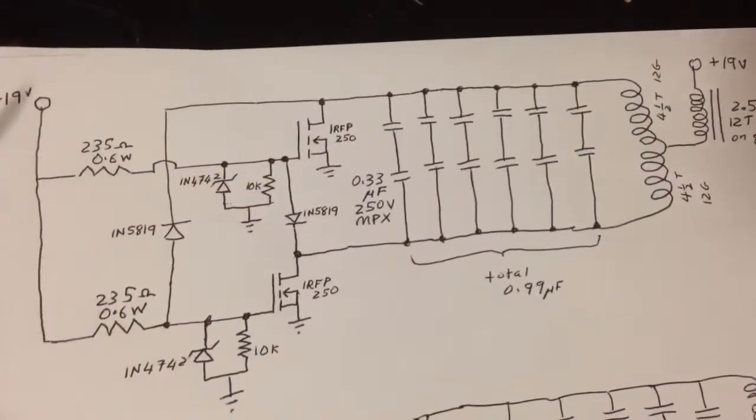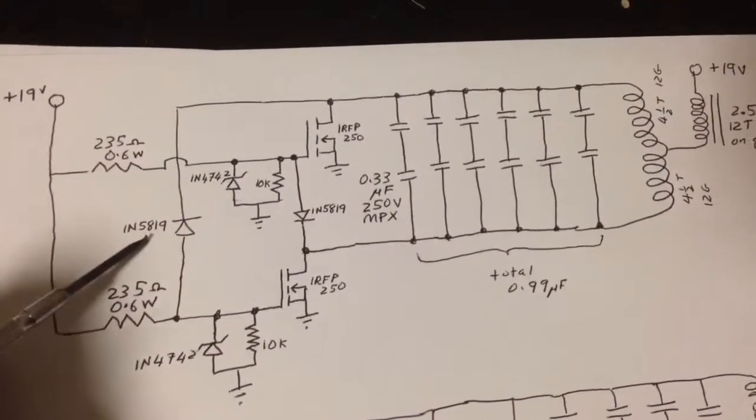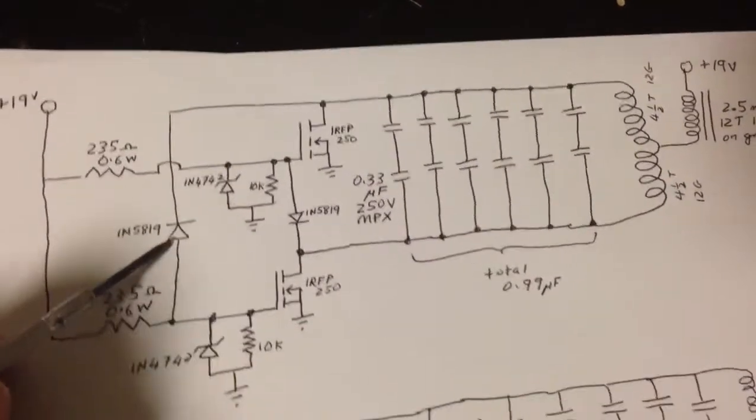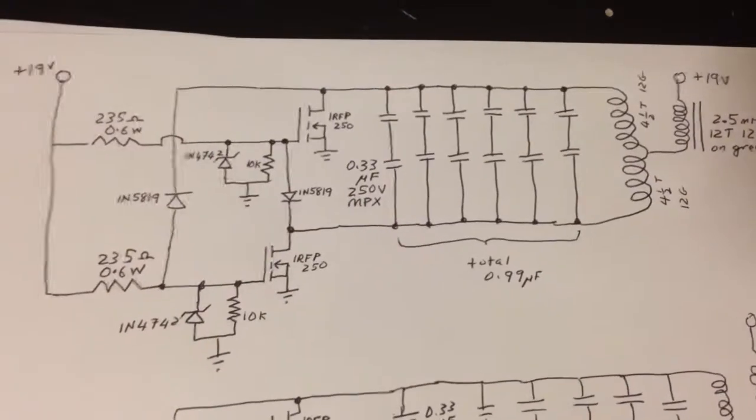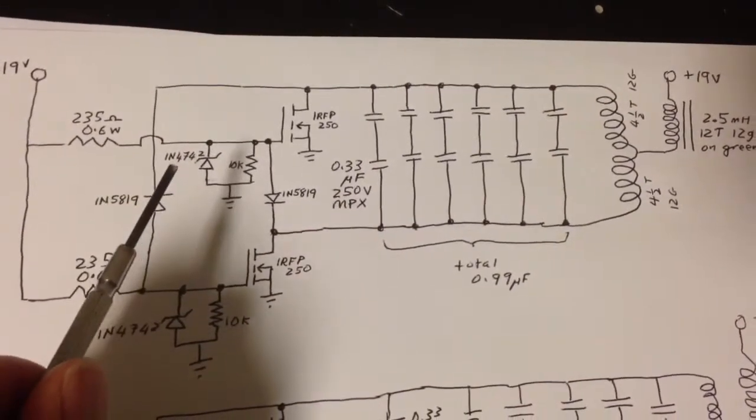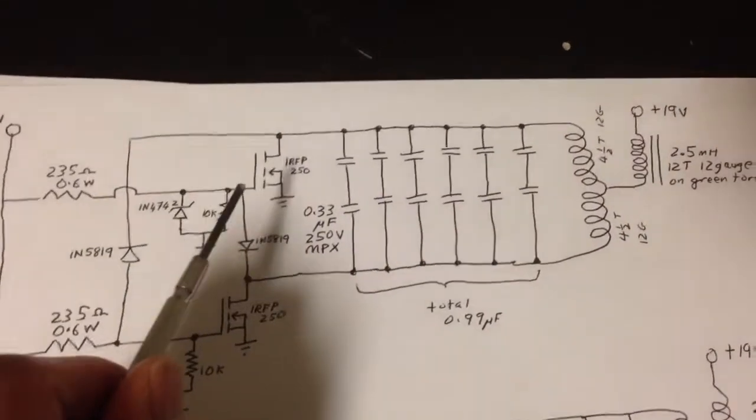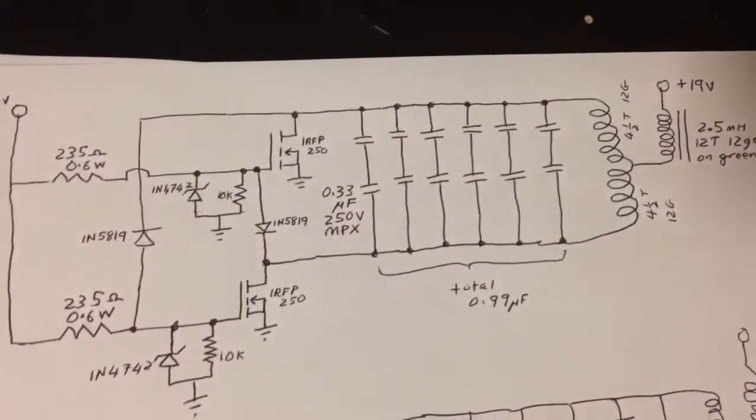What I was using with the circuit, which is what everyone else uses pretty much, is 5819. This one is a very fast Schottky diode. Then I was clamping the voltage at 12 volts with these 1N4742 to prevent over voltage on the gate of these IRFB250s.